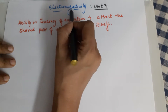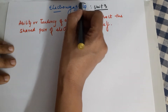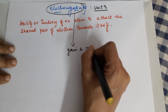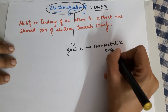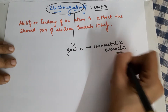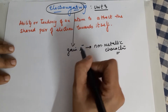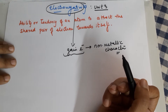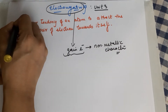Moving to the topic of the day — electronegativity. In simple words, electronegativity means the tendency to gain electrons, which can be related to non-metallic character generally speaking. Electronegativity means electrons are gained, so non-metallic elements are electronegative in nature — a statement we use in class 10th.